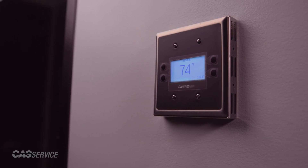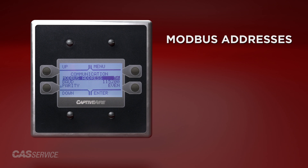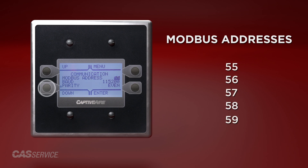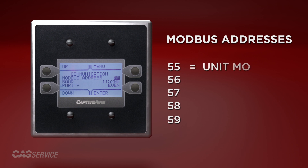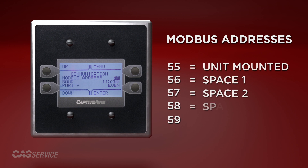The HMI Modbus addresses will be as follows: 55, 56, 57, 58, and 59, where 55 is always the unit-mounted HMI, with each additional one being a space HMI if configured as such. At a minimum, the unit will always have one unit-mounted HMI addressed as 55.